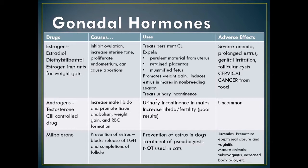Testosterone and other androgens increase male libido, promote tissue anabolism — increasing muscle growth and weight gain — and stimulate red blood cell formation. They can cause urinary incontinence in males and increase libido and fertility, though with some poor results.